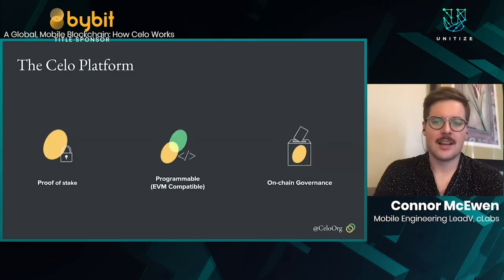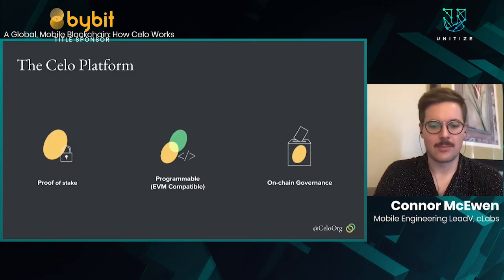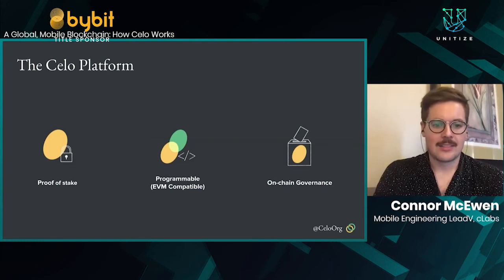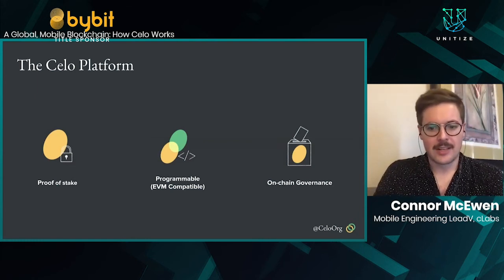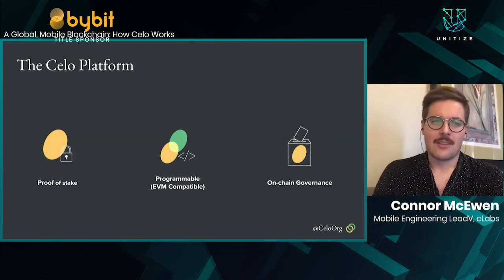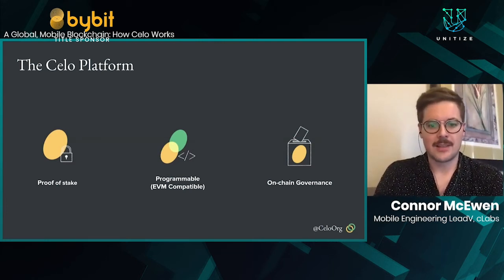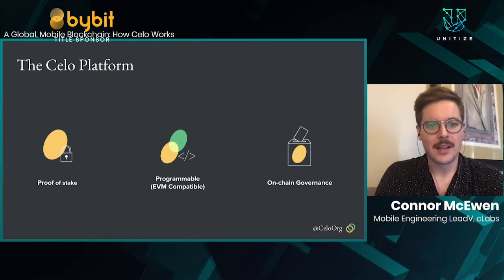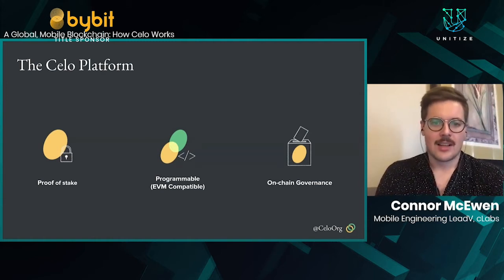On top of that blockchain, we have a bunch of core contracts which govern the Celo protocol — that's the protocol layer. Our smart contracts are written in Solidity, and you can see how there's a tight interface between both the contracts and the blockchain. On top of that, we also focus on the application layer — our mobile wallet. The reason we took such a full-stack approach is because we wanted to build a really compelling end-user experience. Only by designing from top to bottom with a product experience in mind could we deliver an easy-to-use, financially inclusive system.